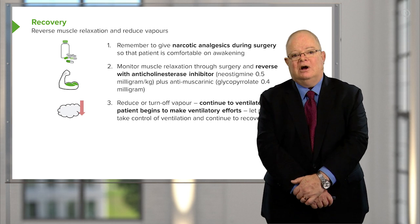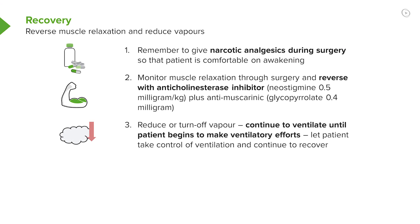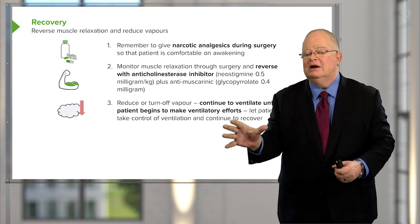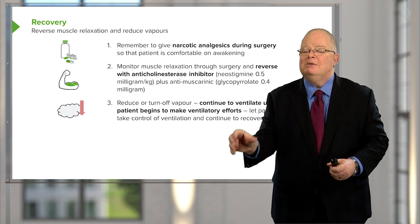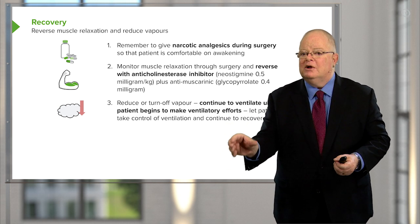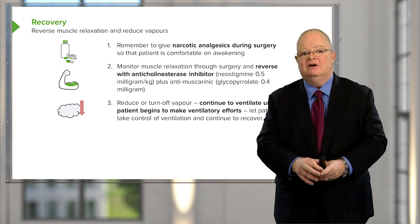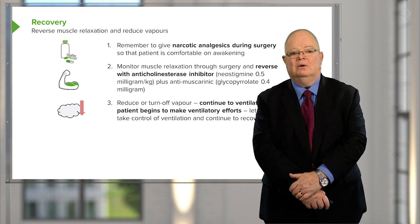Reduce or turn off the vapor but continue to ventilate the patient until they begin to make ventilatory efforts on their own, and let them take control of ventilation as they continue to recover. Initially you're bagging them or letting the ventilator control their ventilation, but as they begin to make more effort on their own you back off a little, and ultimately they should be able to control ventilation independently.